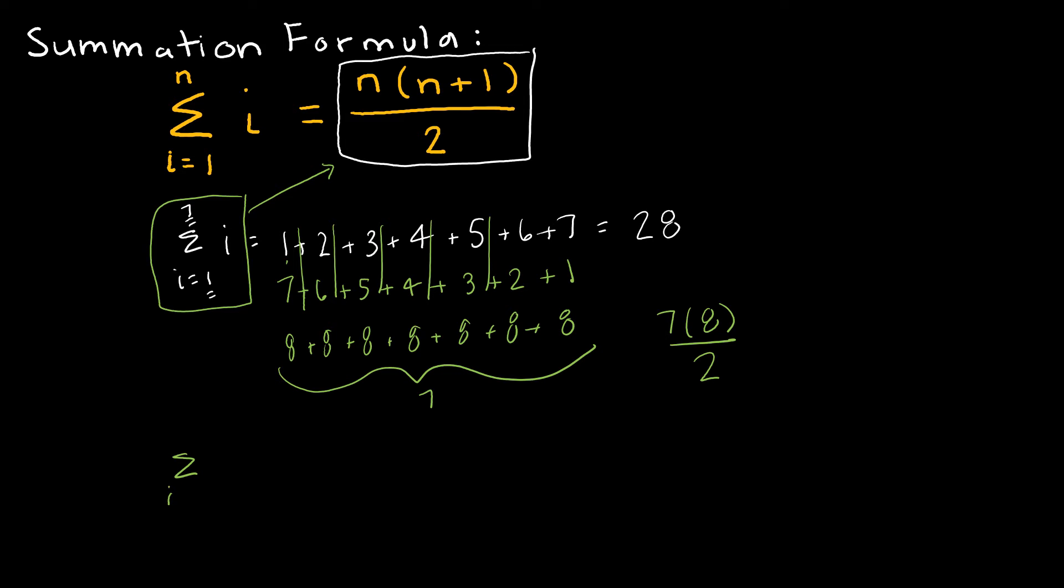That's all this formula is telling me. So this formula says as i goes from 1 to 7 of i, I'm going to take n, which is 7, times n plus 1, which is 7 plus 1, or 8, and I'm going to divide it by 2, which is 56 divided by 2, which is 28. So we get the same value, whether we're using the sum written by hand or using the formula.